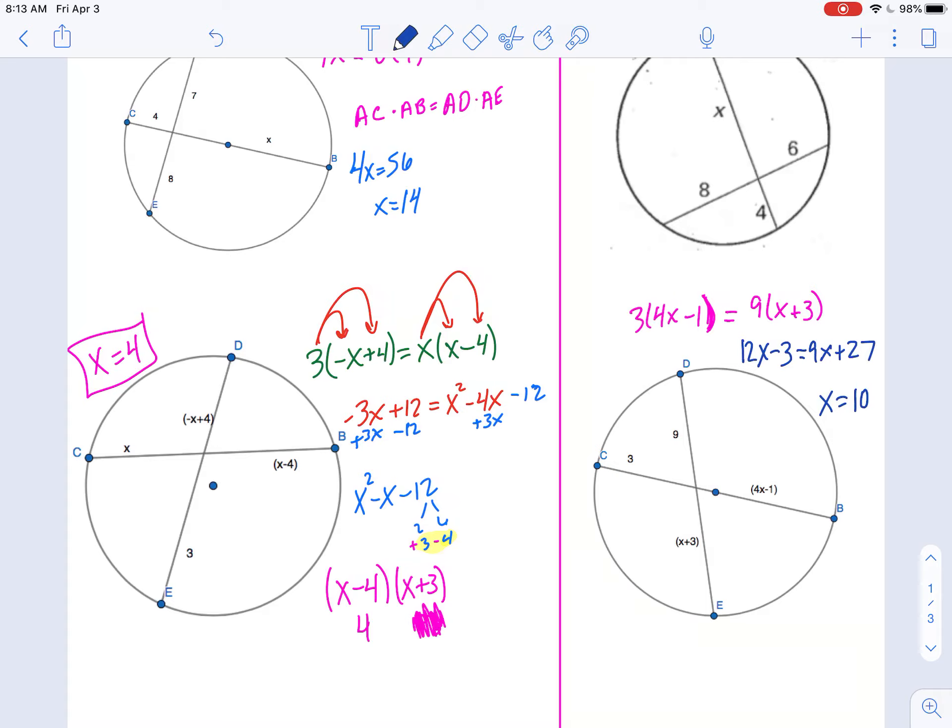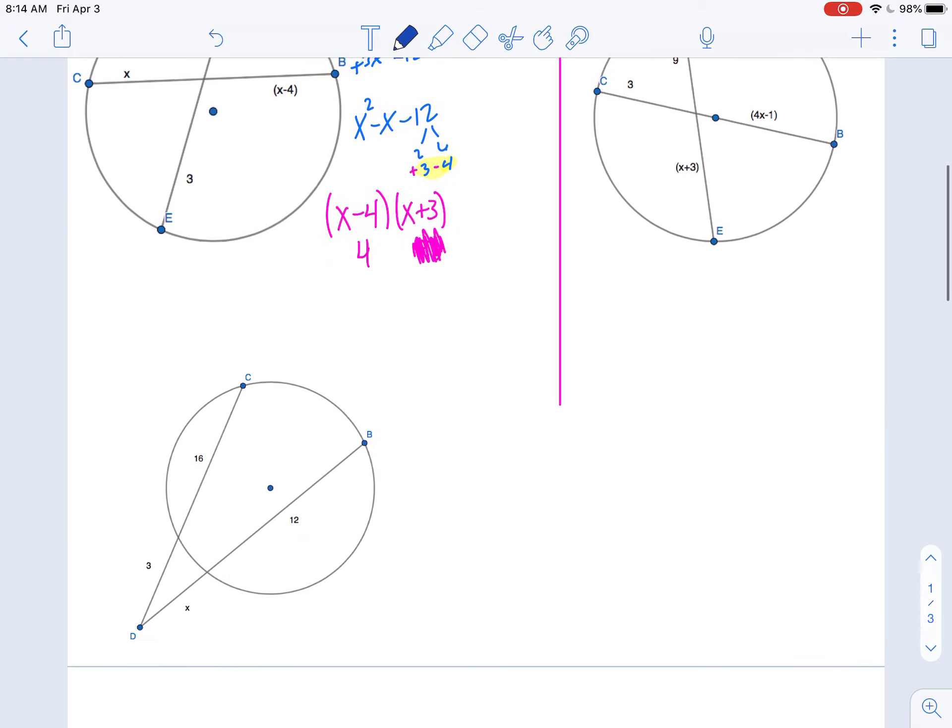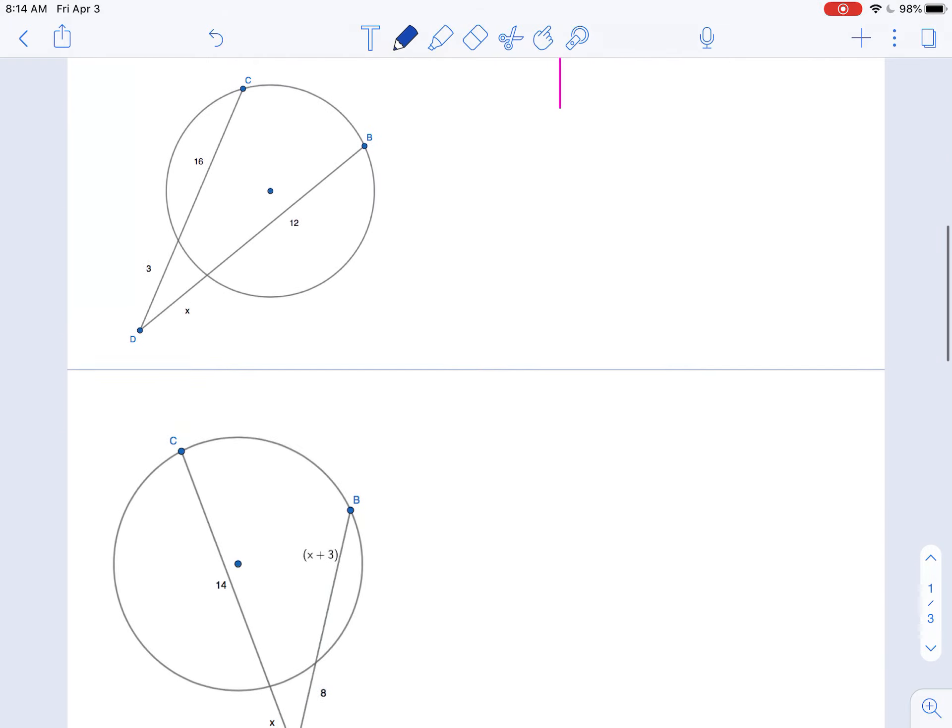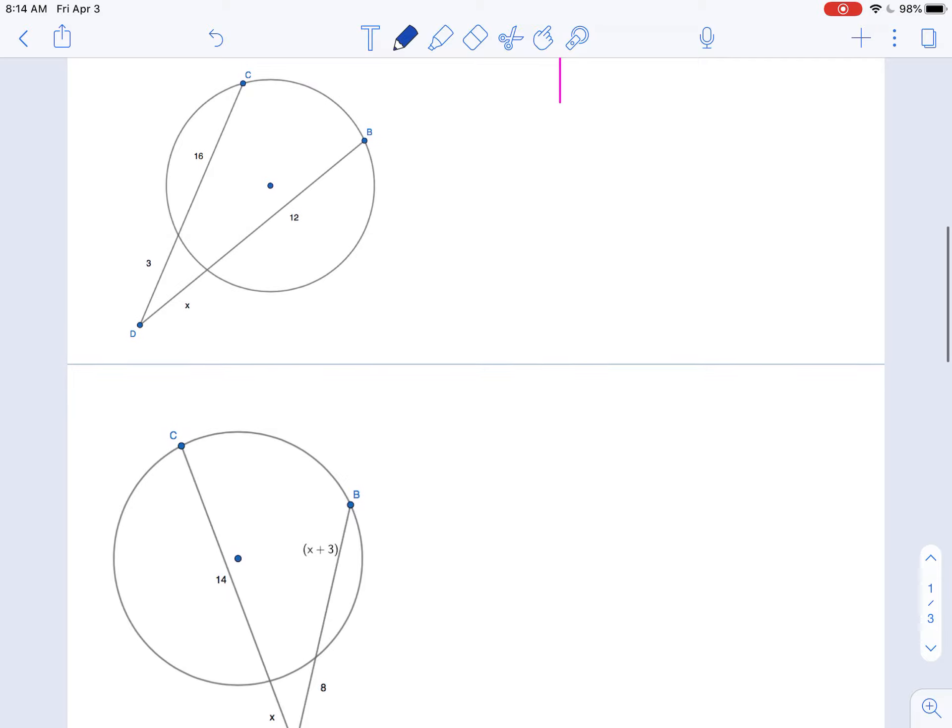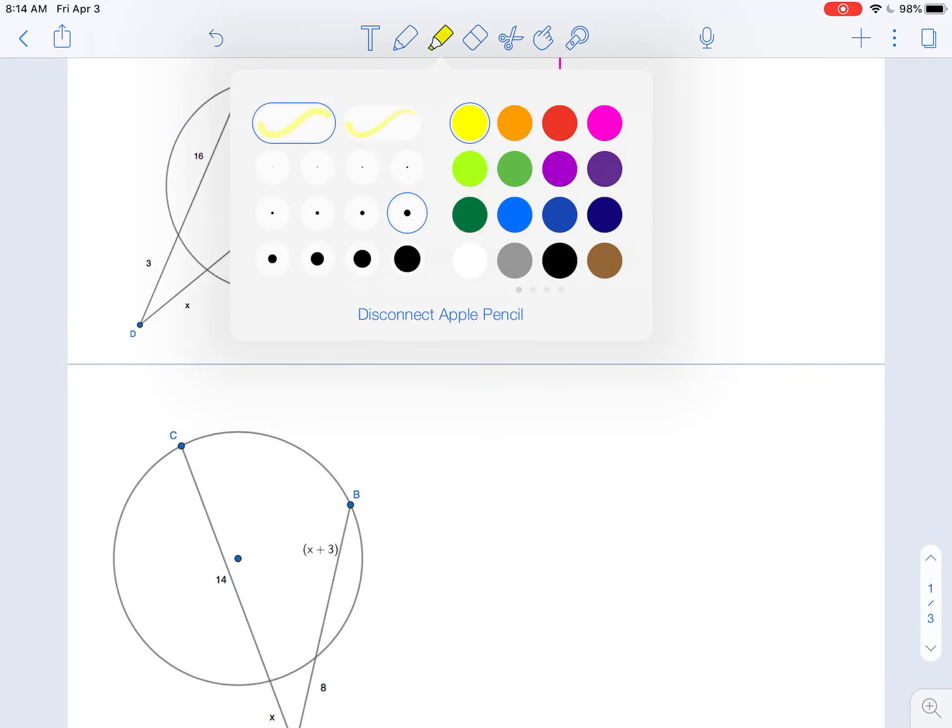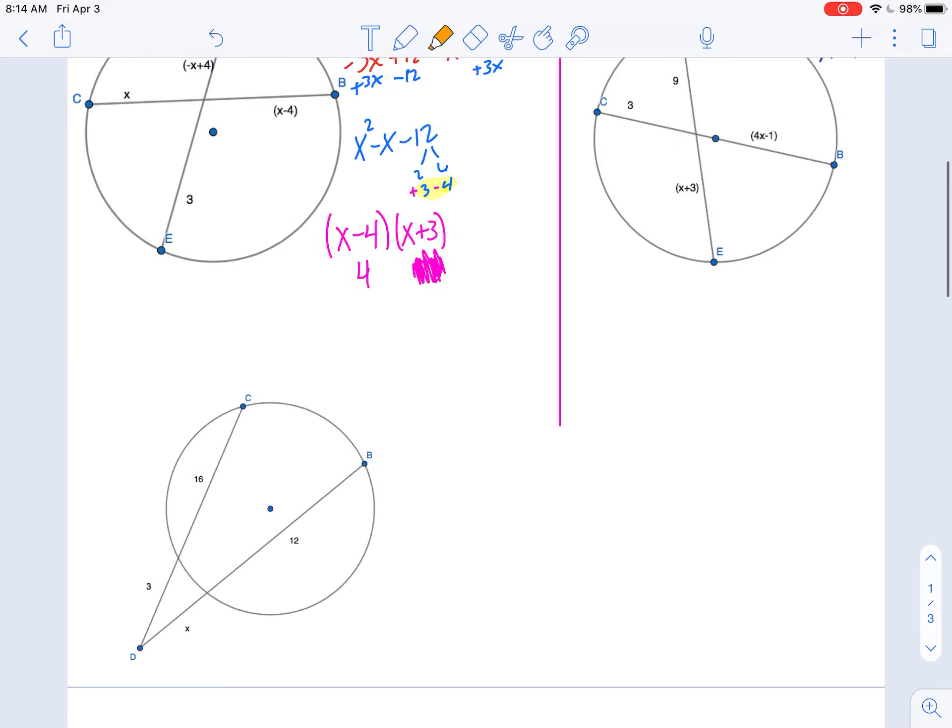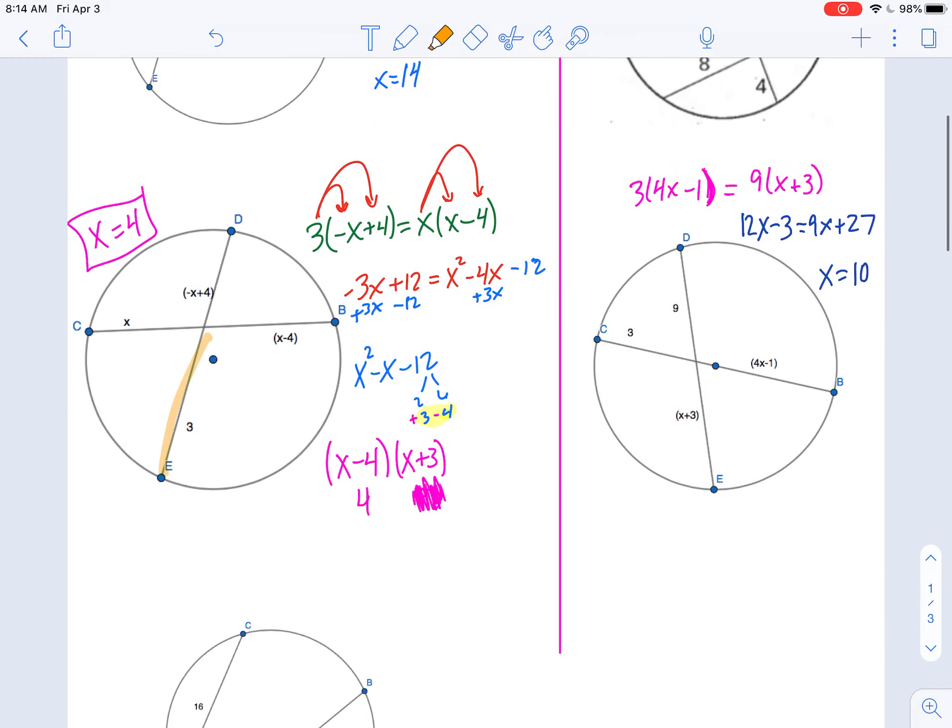So we're looking at 12x minus 3. I distribute to both parts, equals 9x plus 27. And x is 10. I've got 3x equals 30. I did skip a step in the middle there just to keep this video a little bit shorter.